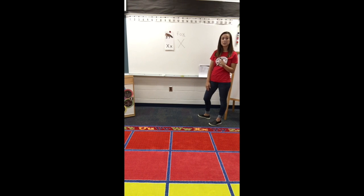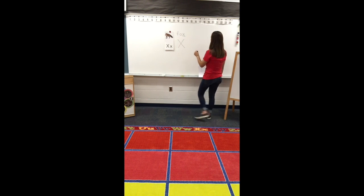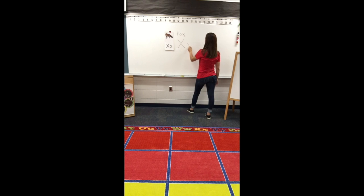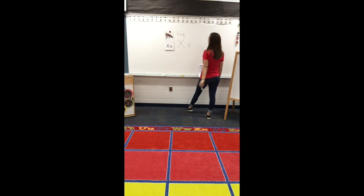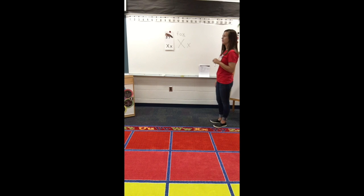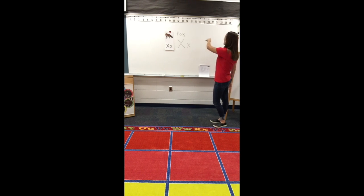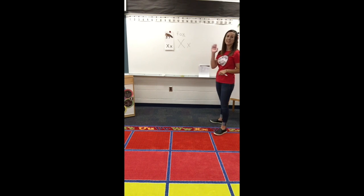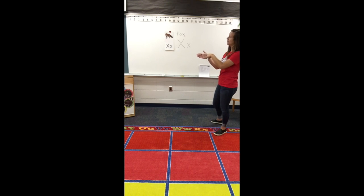Now watch as I show you the lowercase x. Start in the middle, slant right. Start in the middle, slant left. Get your finger ready and trace my lowercase x with me. Here we go. Start in the middle, slant right. Start in the middle, slant left. Good job. Let's trace it on our hands. Start in the middle, slant right. Start in the middle, slant left.